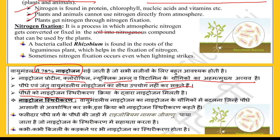Nitrogen fixation is a process in which atmospheric nitrogen gets converted — or fixed — into the soil with the help of different bacteria. The bacteria used is known as rhizobium, which is present in the root nodules of legume plants. Sometimes nitrogen fixation also occurs when lightning strikes.